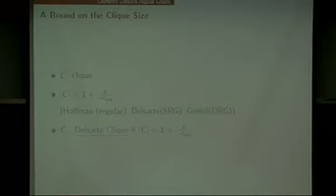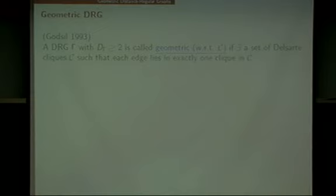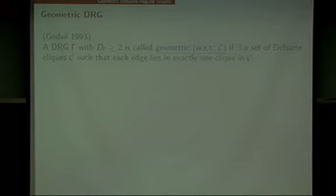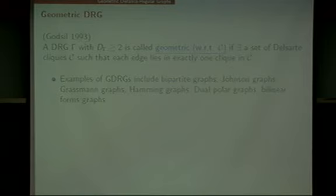A given clique is called a Delsarte clique if its cardinality is exactly this maximum number. A clique is a Delsarte clique if and only if it is a completely regular code with covering radius diameter D minus 1. In 1993, Chris Godsil introduced the notion of geometric DRGs. A non-complete distance regular graph is called geometric with respect to some set C, if there exists a set of Delsarte cliques C such that each edge lies in a unique element of C. Examples include many well-known classical families such as Johnson graphs, Grassmann graphs, Hamming graphs, and so on.